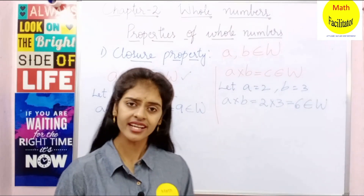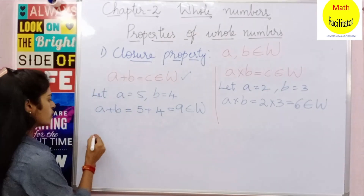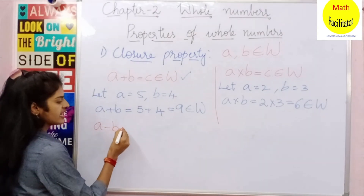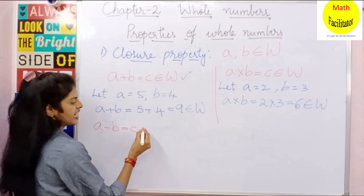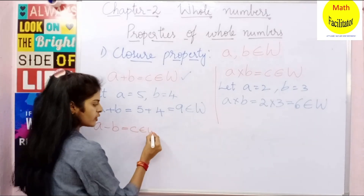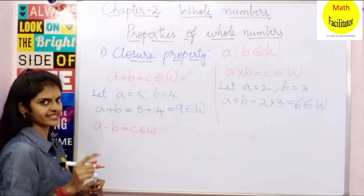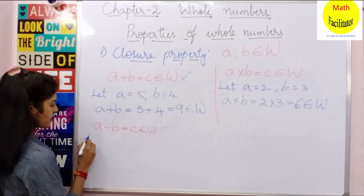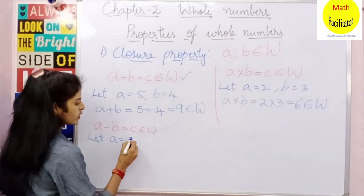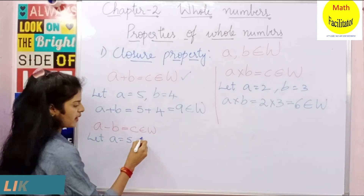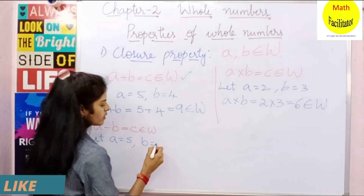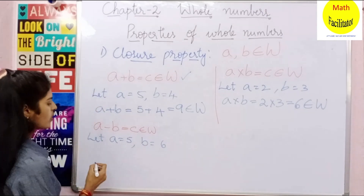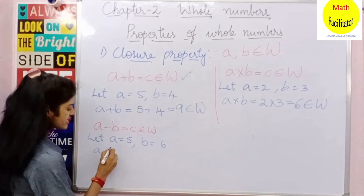Let us check for subtraction also. A minus B equals some C — it should belong to whole numbers for this property to be satisfied. Let us take an example. Let A equal to 5 and B equal to 6.